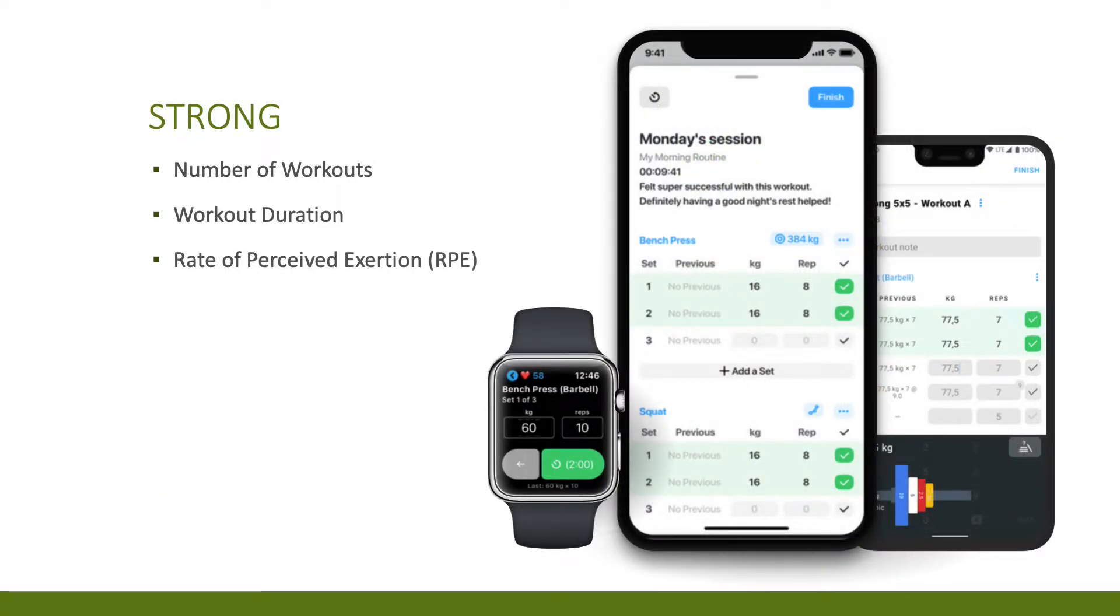In the past year I started using the Strong app on my iPhone to track the number of workouts I have per day, the durations, and how I perceive the intensity of each workout, which is known as RPE. The Strong app syncs with my iPhone and my Apple watch, which makes it a pretty seamless integration.